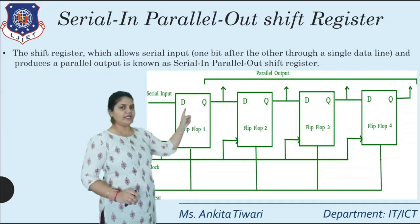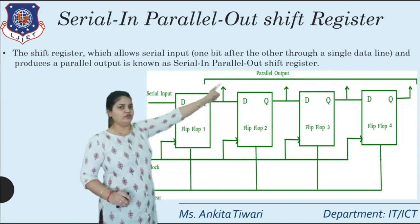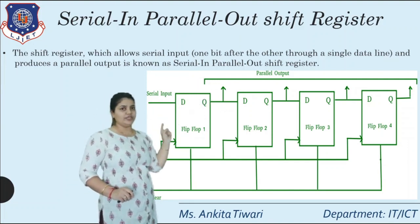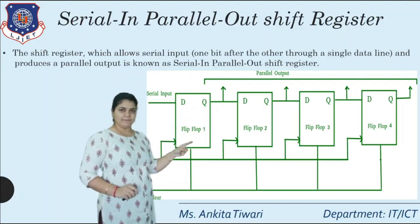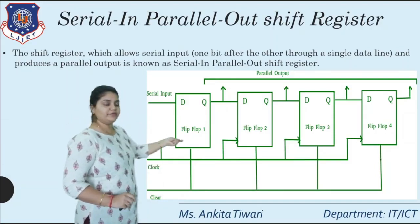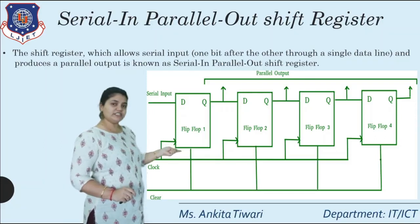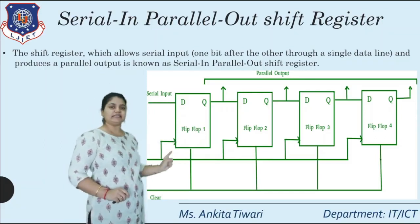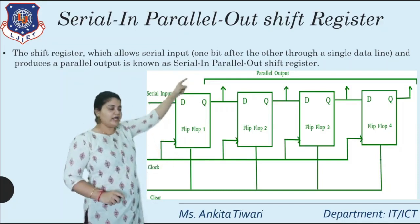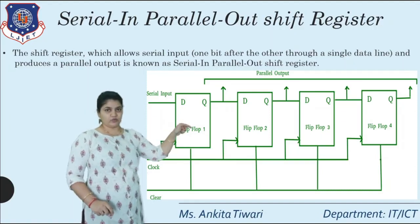In the SIPO shift register, each flip-flop's Q output is taken out as a parallel output. So Q of the first flip-flop, Q of the second, Q of the third, and Q of the fourth are all output simultaneously. A common clock pulse is provided, taken from zero to one — that is, positive edge triggered. This is how the output is parallelly outputted while the input is given serially.